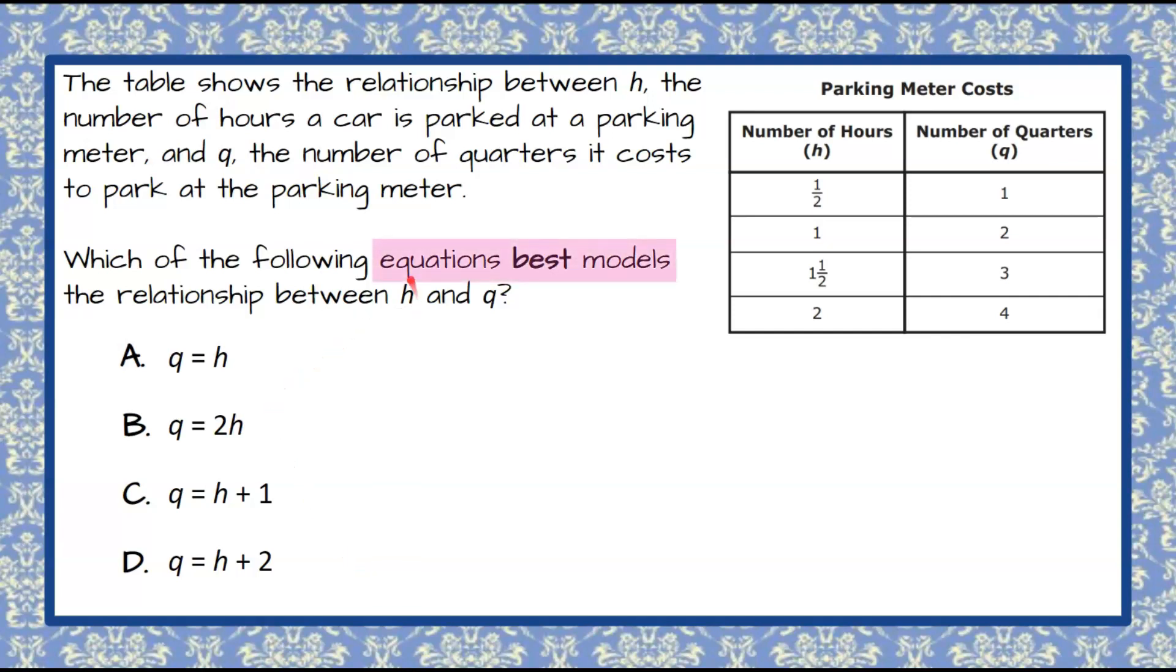So we're going to begin by seeing that they're asking us to determine which of these four equations best models the relationship between H and Q. So we have here H, which is the number of hours that were parked, and Q, the number of quarters that we put in the parking meter to park. So we're looking to see what our mathematical relationship is between all of these numerical values. So what do you do to H to get to Q? And we can see that all of these equations are Q equals something happening to H.